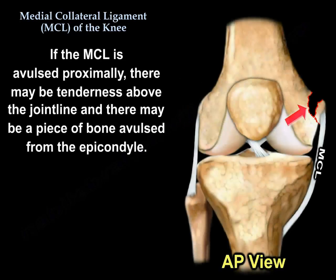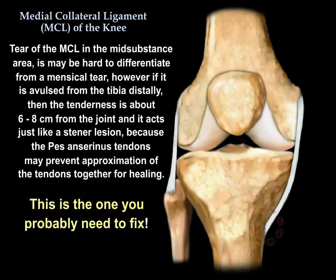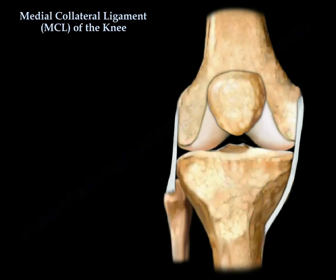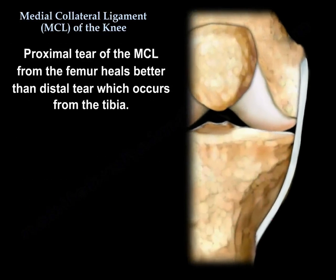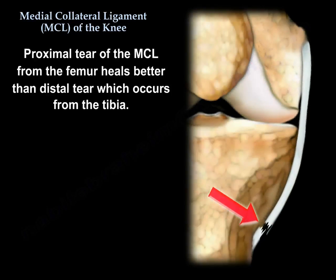If the MCL is avulsed proximally, there may be tenderness above the joint line and a piece of bone avulsed from the epicondyle. In the mid substance, it may be hard to differentiate from a meniscal tear. If it avulses from the tibia distally, the tenderness is about 6 to 8 cm from the joint and it acts like a sternal lesion — this is the one you probably need to fix. Proximal tear of the MCL from the femur heals better than a distal tear from the tibia.